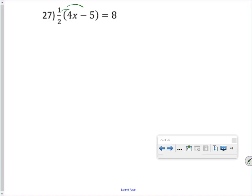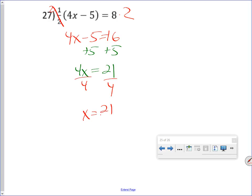So I'm going to distribute the 1 half, and that'll give me 2x minus 5 halves equals 8. I can go that way, but instead, and this is where it becomes useful to remember that other trick I had, is I can also multiply both sides by 2. That cancels, and I'll get 4x minus 5 equals 16. Add 5 to both sides, and I'll get 4x equals 21. Divide both sides by 4, and I'll get x equals 21 over 4.